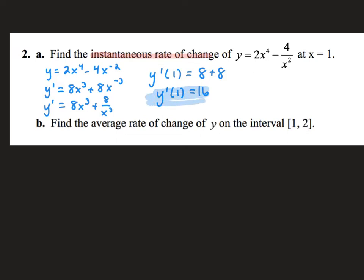The next one wants an average rate of change. The formula is f of b minus f of a over b minus a, and your interval tells you what a and b are. y of 2, plugging 2 in, gives me 31. Minus y of 1, plugging 1 in, gives me negative 2. So my average rate of change is 33.